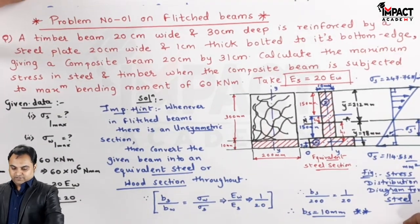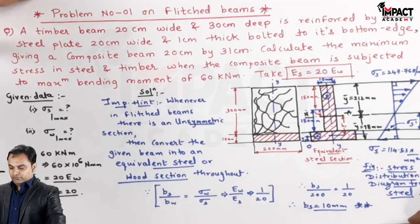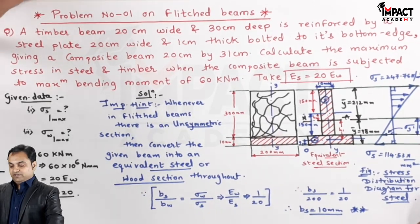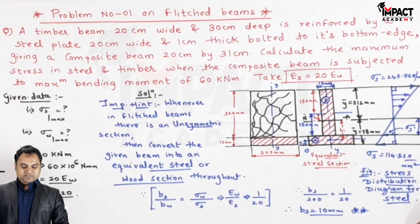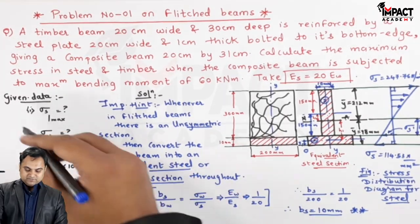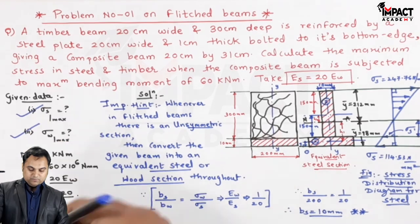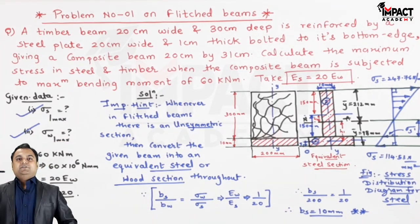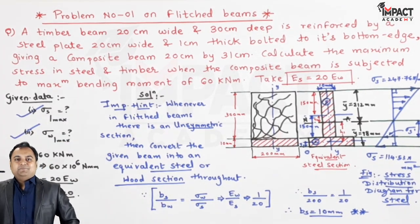In this video we have seen how to find the stresses in the case of flitch beams. The maximum stress in steel is 114.53 N/mm², the maximum stress in timber is 12.39 N/mm², and at the interface the stresses are 102.84 N/mm² (steel) and 5.14 N/mm² (wood). With this, the problem is complete.